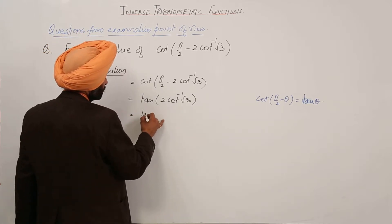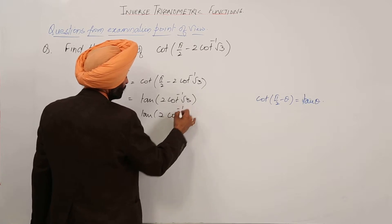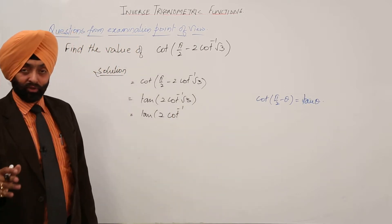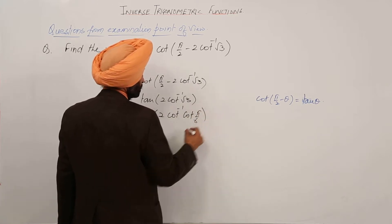Now, we can further write this as tan(2cot⁻¹√3). √3 with respect to cot becomes cot(π/6).